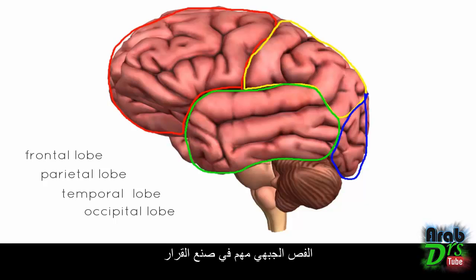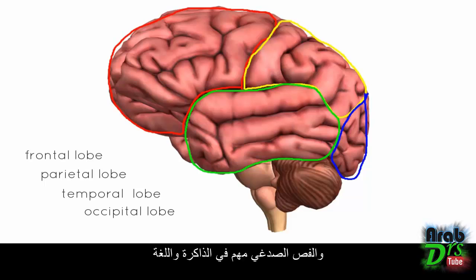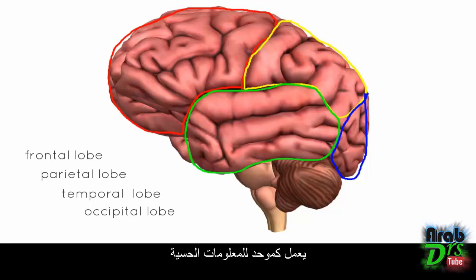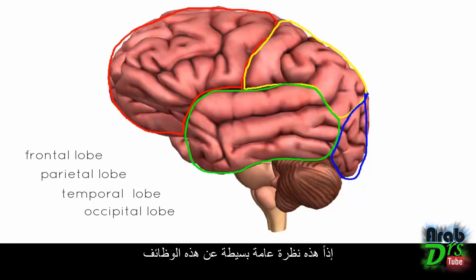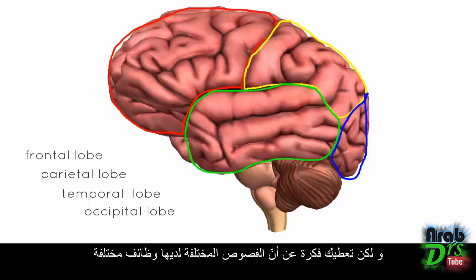The frontal lobe is important in decision making, problem solving, and planning. The temporal lobe is important in memory, language, emotion, and hearing. The parietal lobe acts as an integrator of sensory information — it receives and processes sensory information. And the occipital lobe, sitting at the back, is responsible for vision. That's a crude overview of their functions, but it gives you an idea that different lobes have different functions.